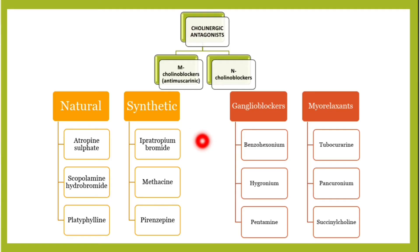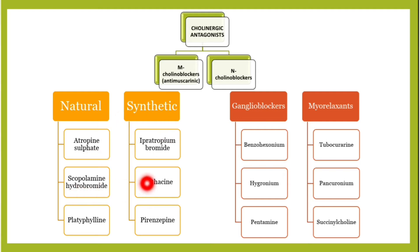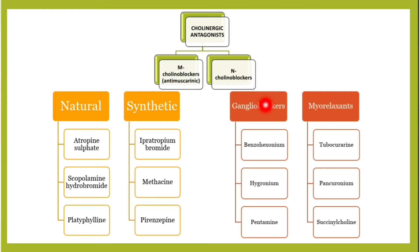Welcome to Basic Medical Sciences. In this video we are going to talk about ganglion blockers. In previous videos we introduced the cholinergic agonists and said they are classified into two main groups: M-cholinoblockers (antimuscarinic) and N-cholinoblockers. We talked about atropine, scopolamine, platyphylline and others. Cholinoblockers can be divided into two groups: ganglion blockers and myorelaxants.